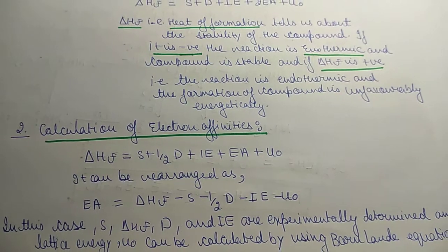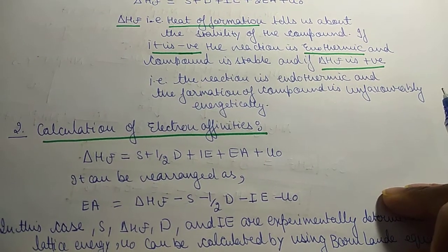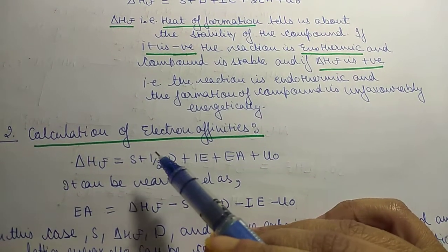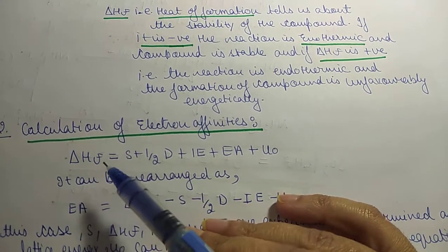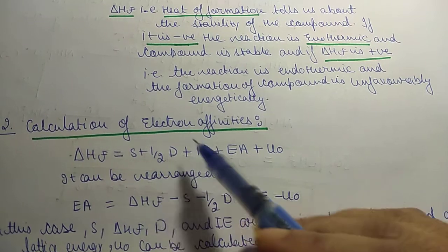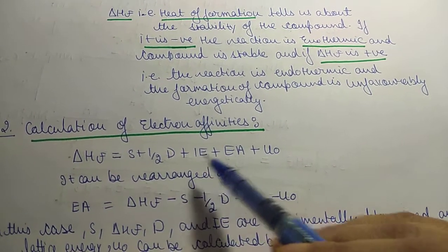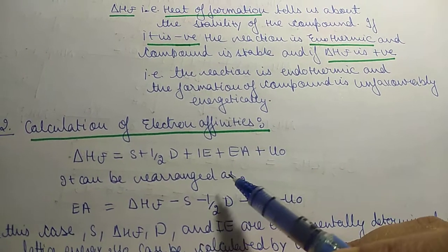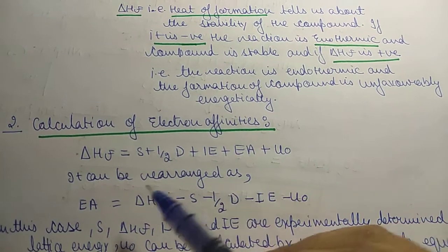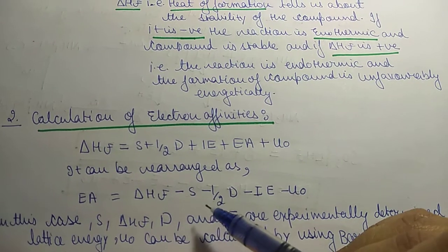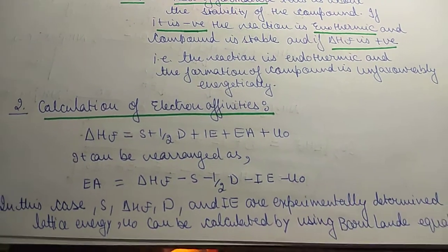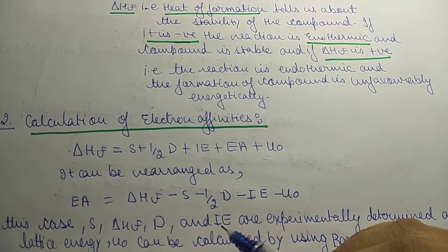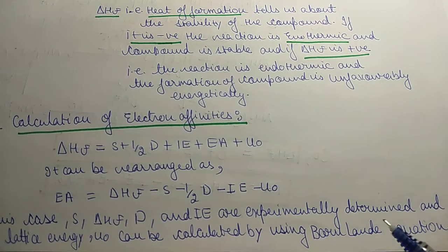The second application: the Born-Haber cycle helps us calculate electron affinities. We know that for NaCl, ΔHf equals S plus half D plus ionization energy plus electron affinity plus U-naught. Rearranging this equation, electron affinity equals ΔHf minus S minus half D minus ionization energy minus U-naught. Here ΔHf, S, D, and ionization energy are experimentally determined.